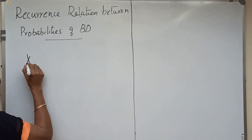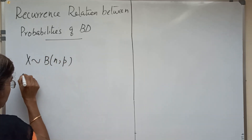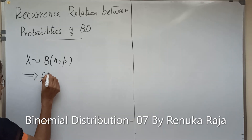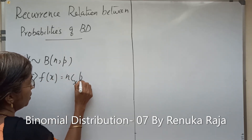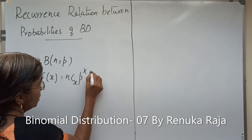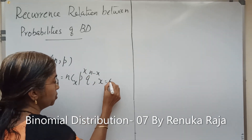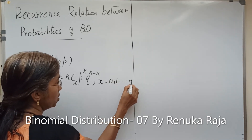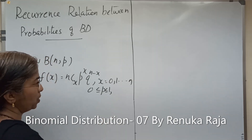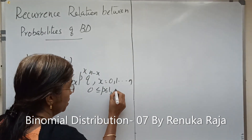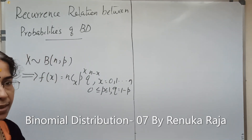We assume x has binomial distribution with parameters n and p, which implies f of x equals n-C-x, p raised to x, q raised to n minus x, for x equal to 0, 1, up to n, where 0 ≤ p ≤ 1 and q equals 1 minus p.